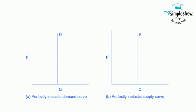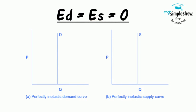Zero elasticity refers to the extreme case in which a percentage change in price, no matter how large, results in zero change in quantity. While a perfectly inelastic supply is an extreme example, goods with limited supply of inputs are likely to feature highly inelastic supply curves. Similarly, while perfectly inelastic demand is an extreme case, necessities with no close substitutes are likely to have highly inelastic demand curves.